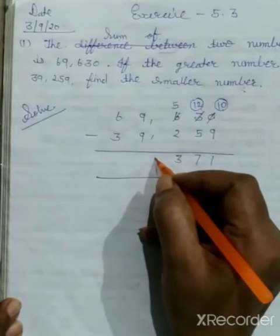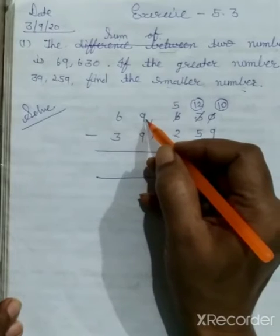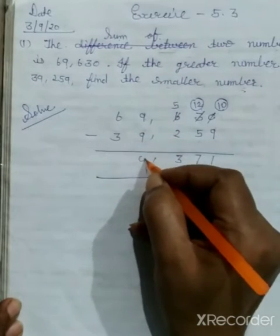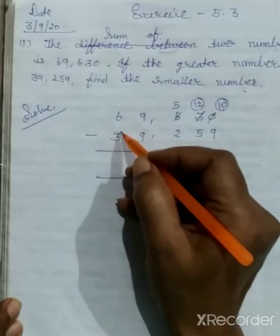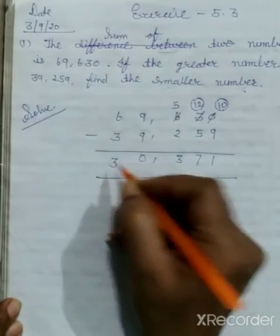Put the commas. Nine minus nine equals zero. Six minus three equals three.